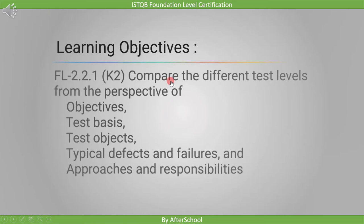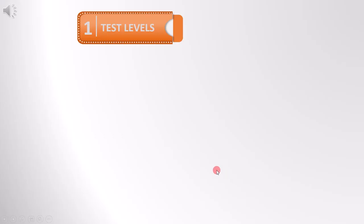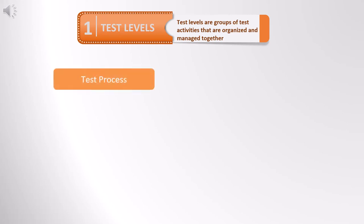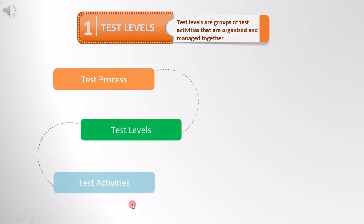Here, we have to compare the different test levels from the perspective of objectives, test bases, test objects, typical defects and failures, and approaches and responsibilities. Test levels are groups of test activities that are organized and managed together. The test process will have different test levels, and the test levels will have different test activities inside them, which are organized and managed together in order to achieve the objective.